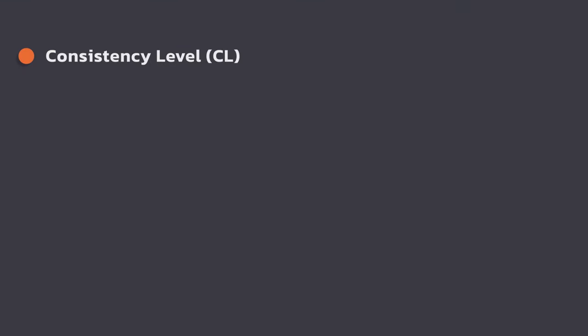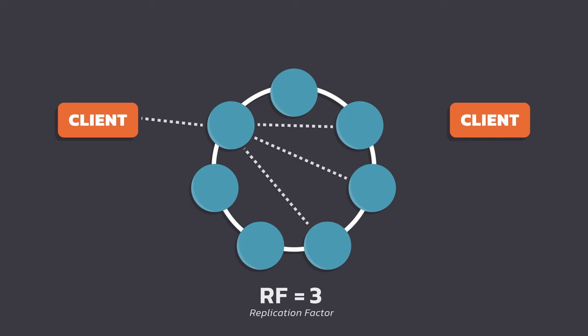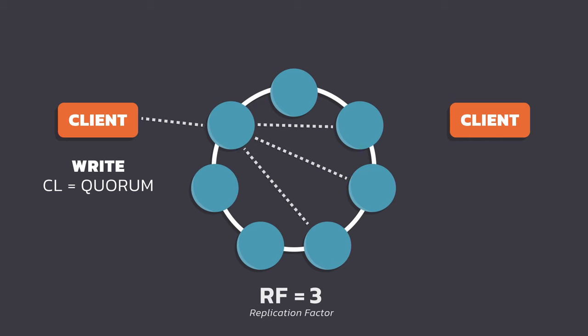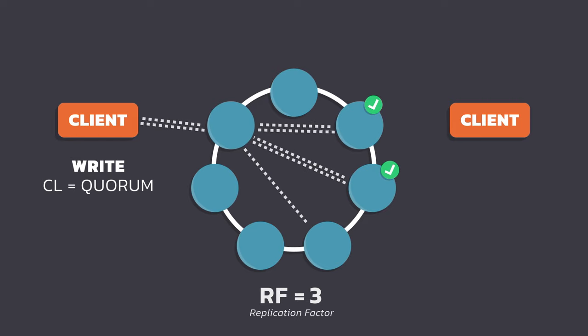Let's take a look at consistency level. I'm going to cover the standard way to do things based on the best balance for performance, availability, and consistency — there are more advanced options available as well. We are using our default of a replication factor of three, meaning any write will be stored on three nodes. We are also using a consistency level of quorum, which translates into a majority of nodes. With a replication factor of three, a majority is two nodes. This means Cassandra will wait for an acknowledgement from two nodes before saying the write is okay and sending the result back to the client. If the consistency level cannot be reached for an operation, the operation will fail.